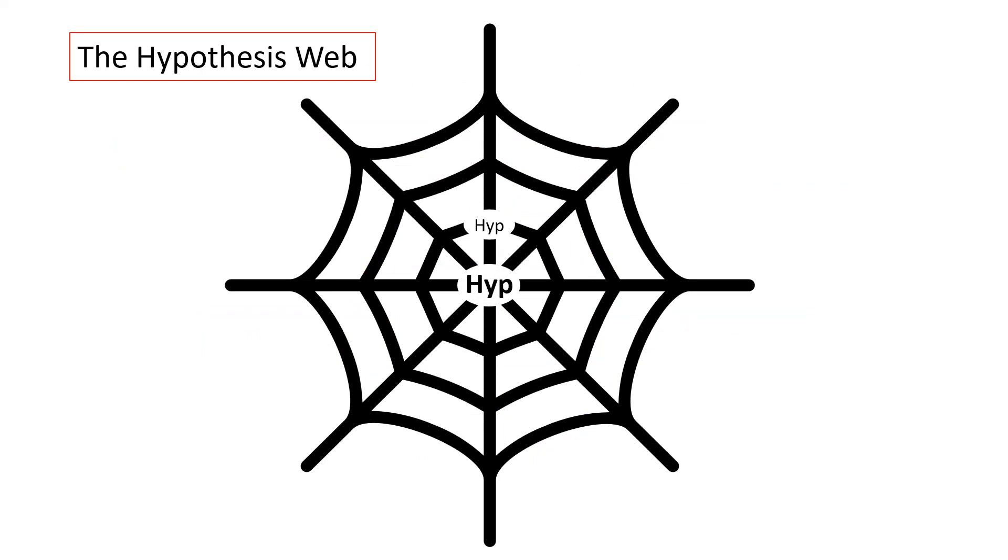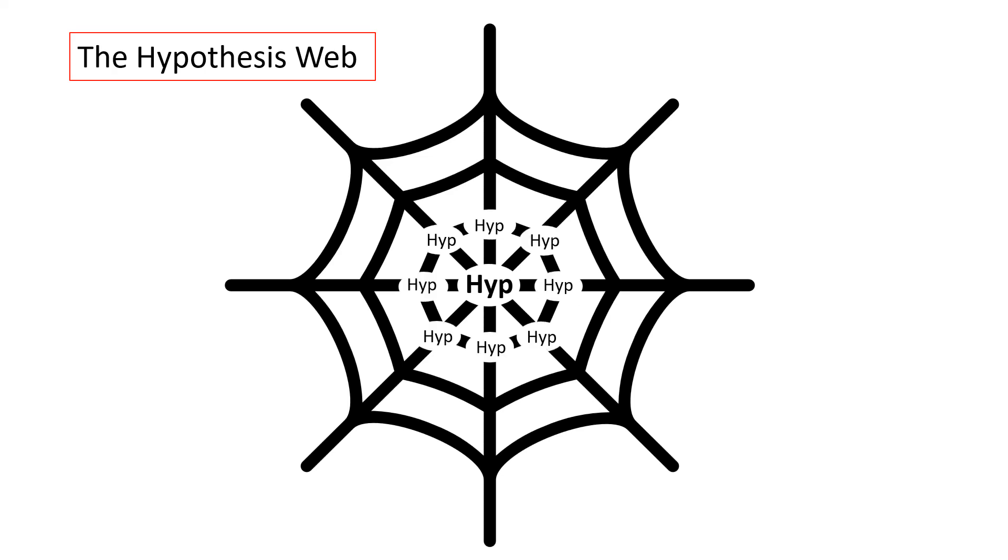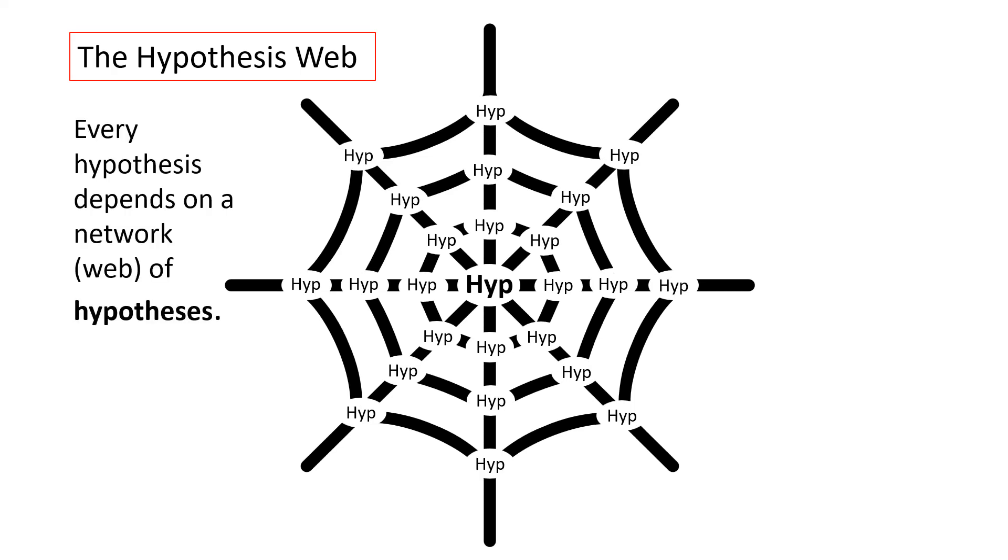Our hypothesis, in other words, does not exist in isolation, but it exists in a network, or a web, of other hypotheses. It depends on these hypotheses, they in turn depend on other hypotheses, and so on. So every hypothesis depends on a network, or a web, of other hypotheses.